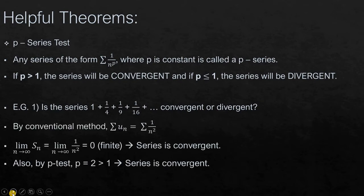If we go by the conventional method, we will find the nth term which we will get 1 over n square, and if we put it in limit n tending to infinity, we will get zero and hence we will conclude that the series is convergent as zero is finite. Also, if we go by the p-test, we will get the value of p equal to 2 which is greater than 1 and hence our series will be convergent.